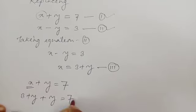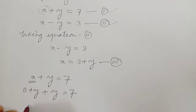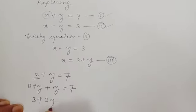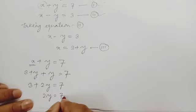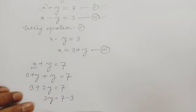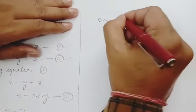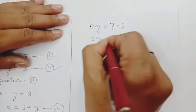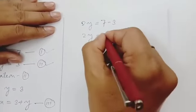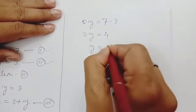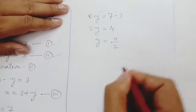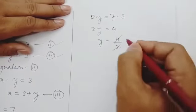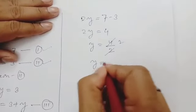Writing equation 1: x plus y equal to 7. In place of x, we put 3 plus y, so 3 plus y plus y equal to 7, which gives 3 plus 2y equal to 7. Transposing 3: 2y equal to 7 minus 3 equal to 4. Transposing 2: y equal to 4 divided by 2, so y equal to 2.